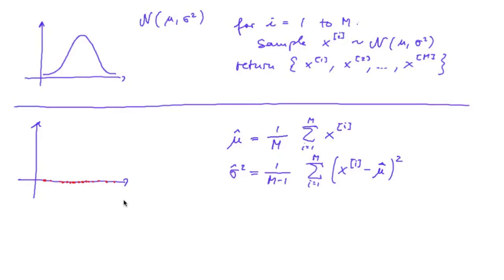So assuming that our particles are, for example, sampled from a normal distribution, we can estimate the mu and sigma of that normal distribution where, of course, the more particles we have, the better our estimate will be.